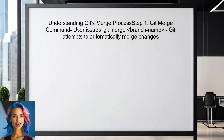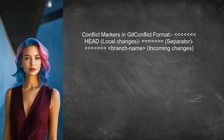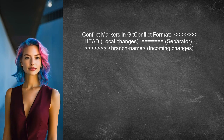To address the confusion about Git's merge process, let's start by clarifying how Git handles conflicts. When you issue a Git merge command, Git attempts to automatically merge changes using its built-in algorithm. If there are conflicts, Git marks the conflicting sections in the file using specific markers. These markers include the less-than symbols, equal signs, and greater-than symbols, which indicate the conflicting changes.